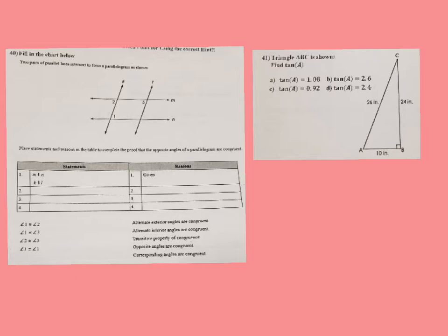So I'm going to kind of go over this one right now. Number 40, two pairs of parallel lines intersect to form a parallelogram as shown. So M is parallel to N, so we know that M is parallel to N, and we know that K is parallel to L. That means K and L, there's different transversals. So M would be a transversal that cuts K and L. So that's given.